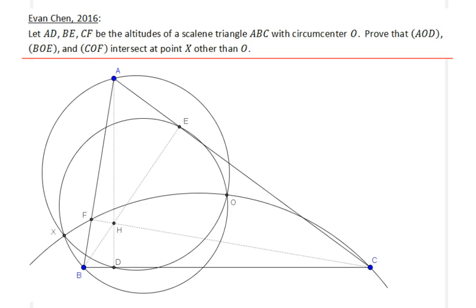Hello everyone. In this lecture we will be going over a problem from Evan Chen's book, the 2016 edition Euclidean Geometry book for Math Olympians. This question appears in the second chapter under the Power of a Point. I would highly recommend Evan Chen's book, sold at the Mathematical Association of America website. The textbook costs about $28, and a PDF edition is available for easy navigation on an iPad or personal computer.